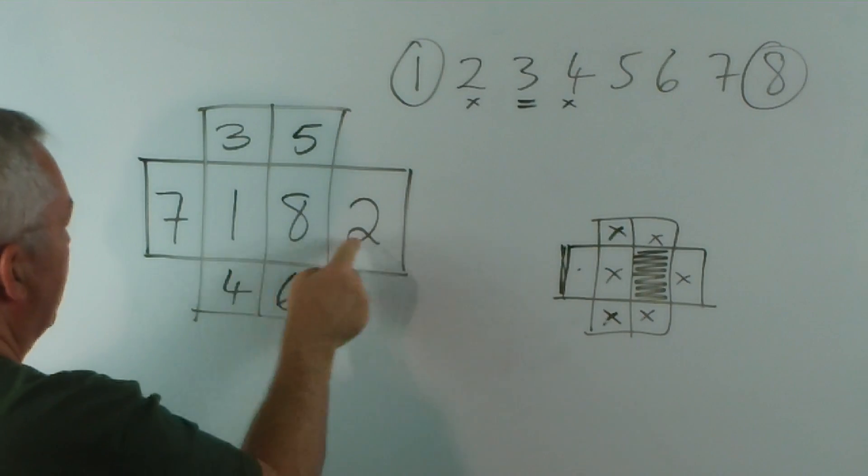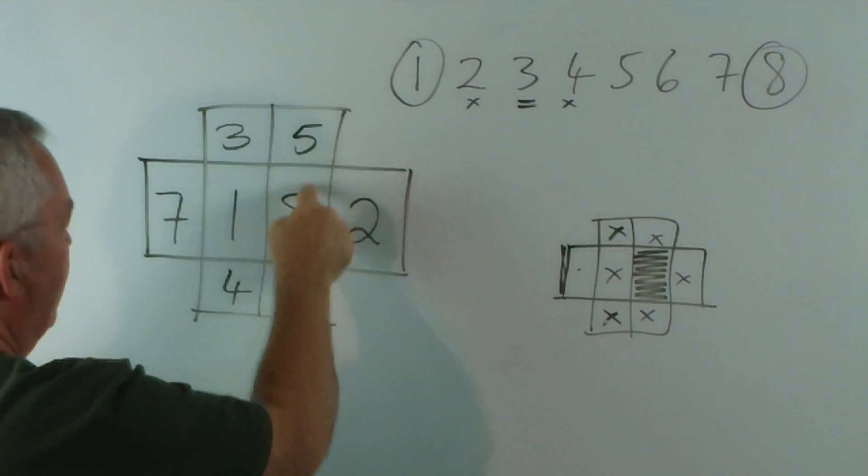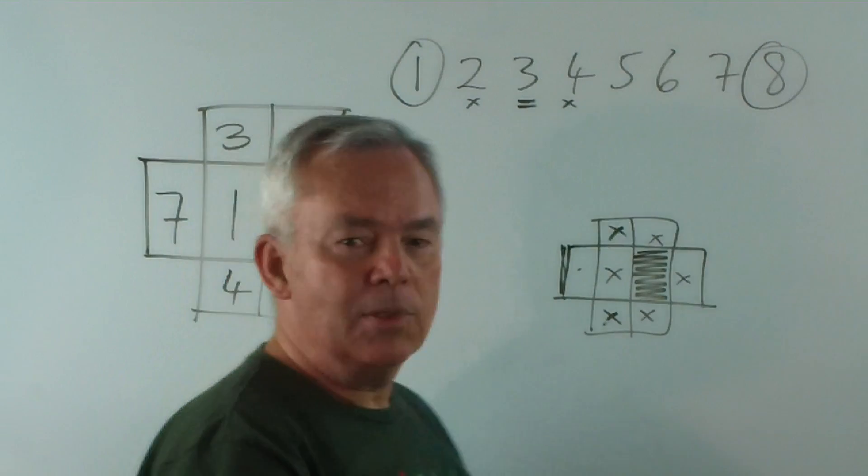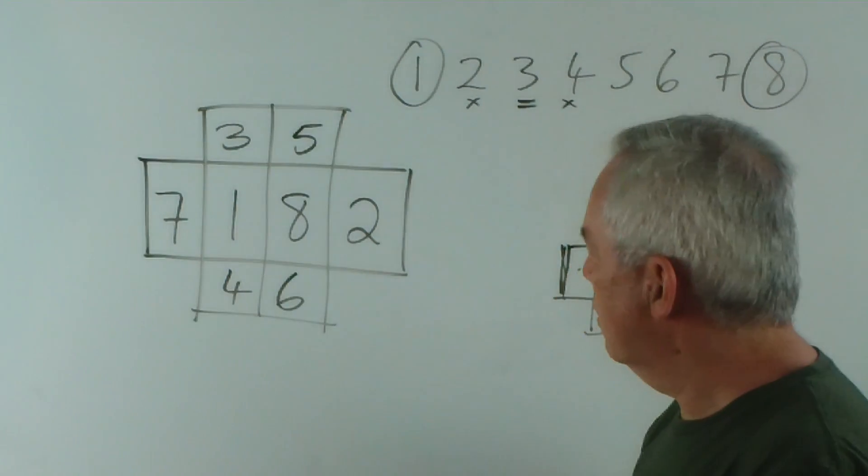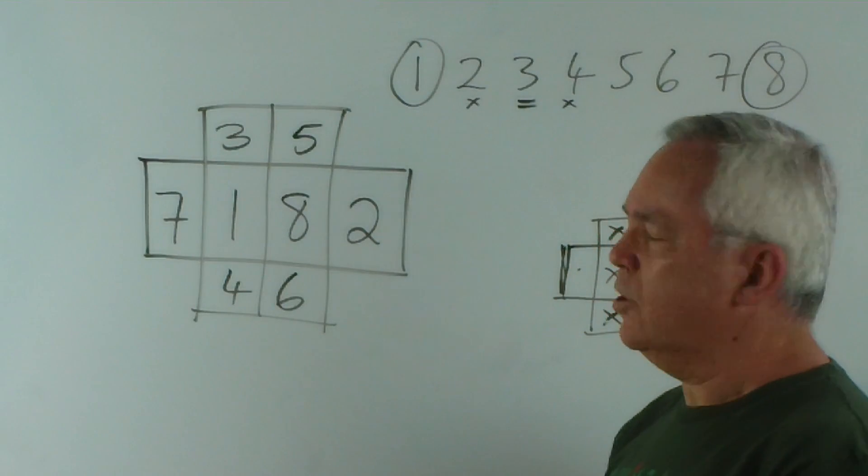So there it is. One, two, three, four, five, six, seven, eight. The eight numbers are in those eight squares. None of them are touching an adjacent number.